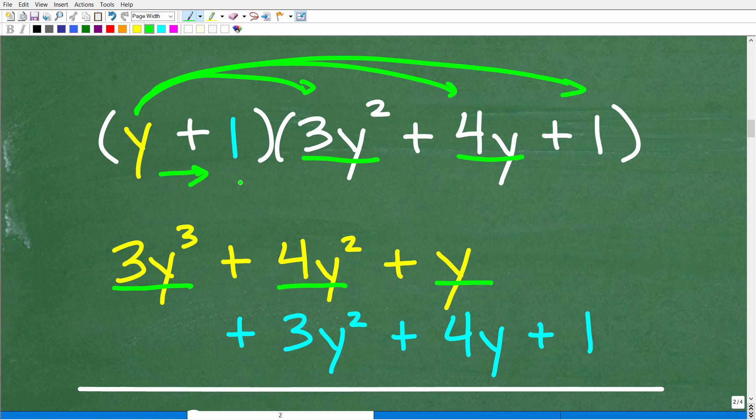All right, now we're going to shift over to our 1. So we have 1 times 3y squared. We'll put that underneath this y squared because these are like terms. Then we're going to have 1 times 4y. So we'll put that right there. So we have a 4y underneath this y. Again, these are like terms. And then 1 times 1, of course, is 1.